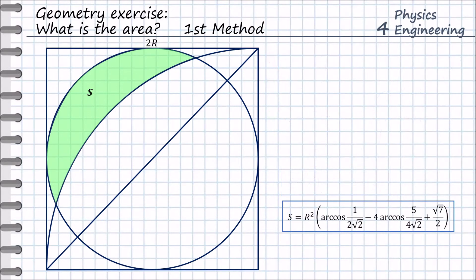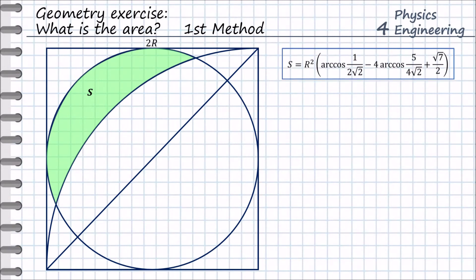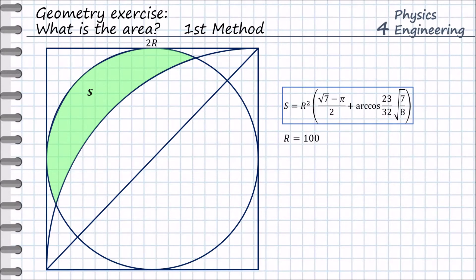Looks a bit complicated, but we can now use some trigonometric formulas and simplify it to the following equation. This is the answer to our problem. Let us now put some numbers in it. If r equals 100 millimeters, we can write this formula in Excel and calculate that the s area equals 5855.25 millimeters squared.